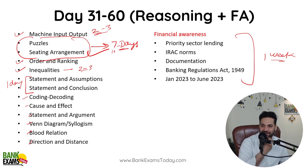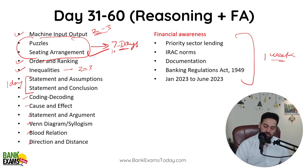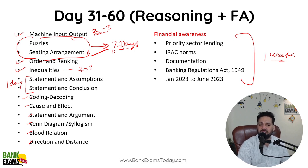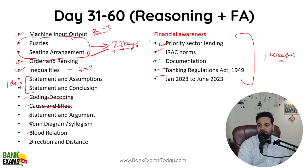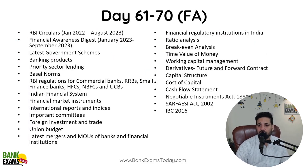The broad deadlines are: first 30 days — quant plus financial awareness; next 30 days — reasoning plus financial awareness. Within these broad deadlines, make your own modifications. As you complete chapters, mark them off in your Google Sheet. For financial awareness in day 31 to 60, cover priority sector lending, IRAC norms, documentation, Banking Regulation Act, and financial awareness from January 2023 till June 2023. Financial awareness is very important.